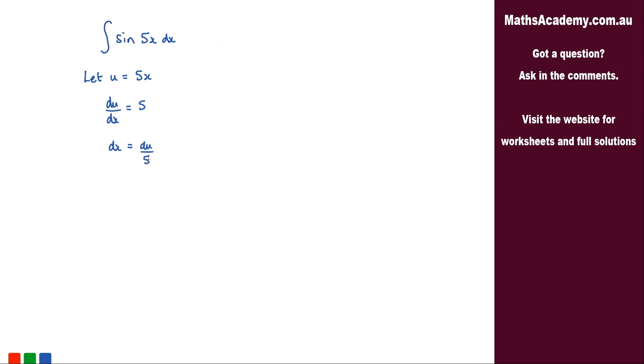Now all I need to do is substitute those in to that original integral. So what I'm going to get is the integral of sine. Instead of the 5x we're going to have u and instead of the dx we're going to have du over 5.